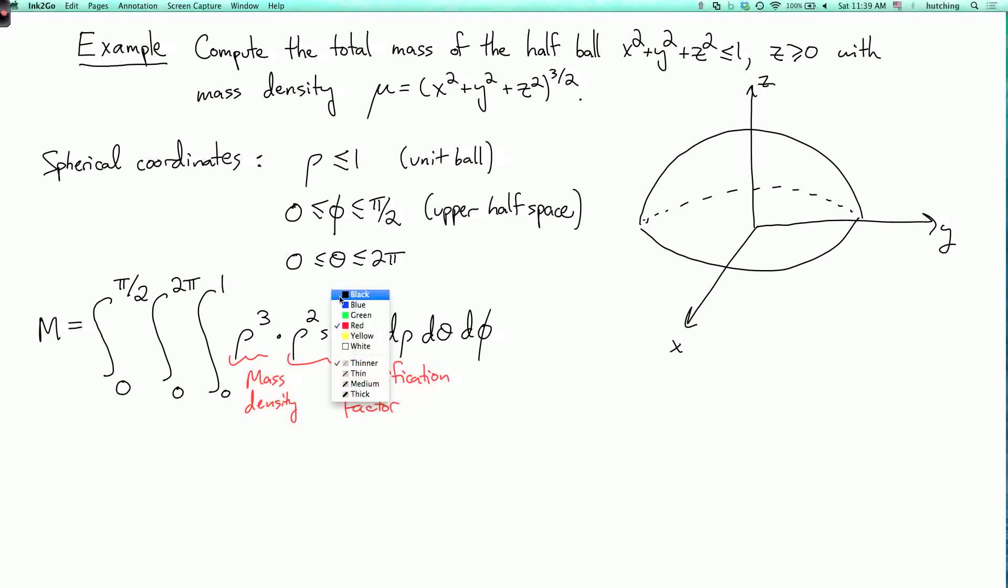So now that we've set this up, it's not hard to evaluate. So let's do the rho integral first. So I have integral from 0 to pi over 2, integral from 0 to 2 pi.